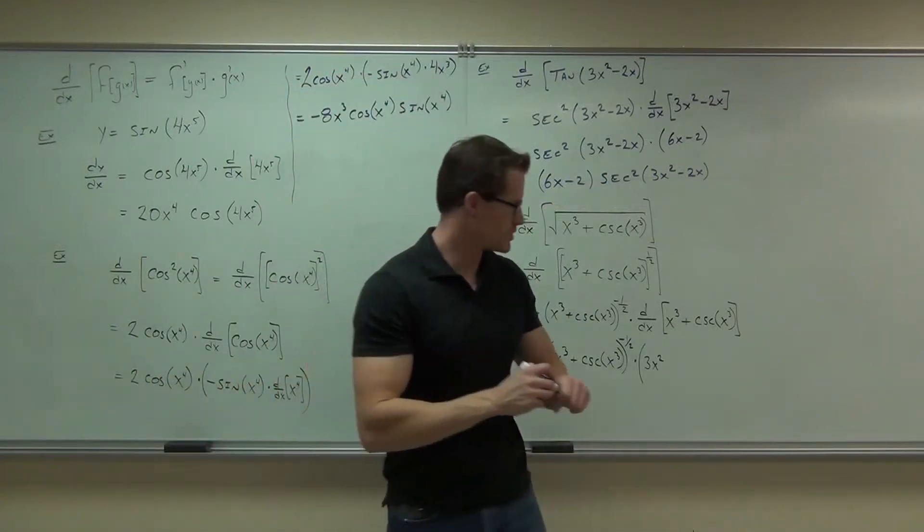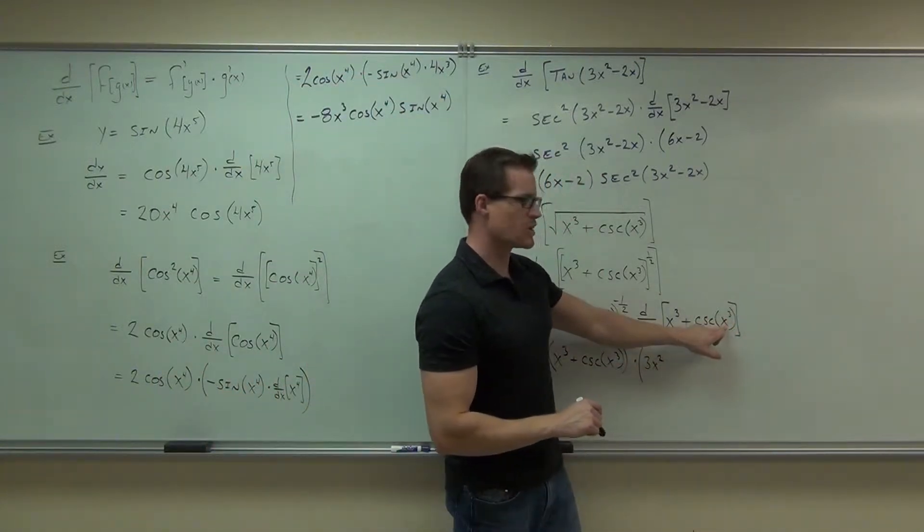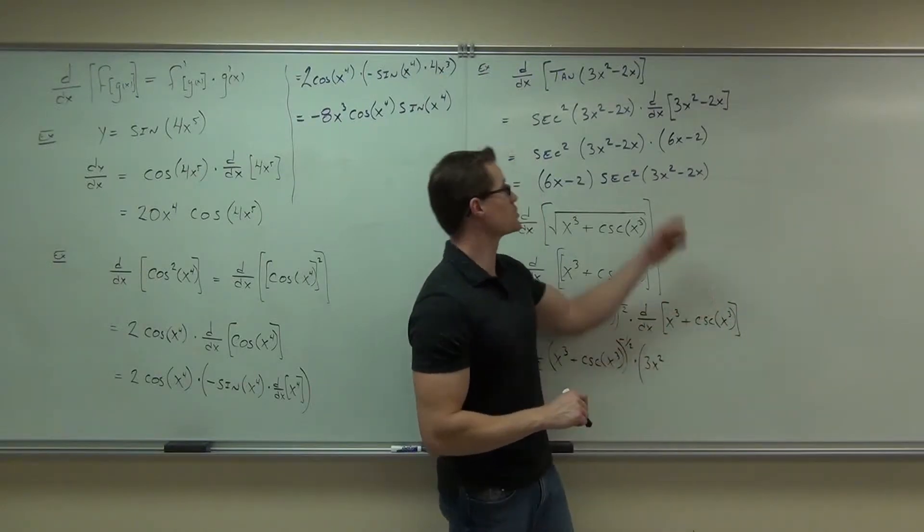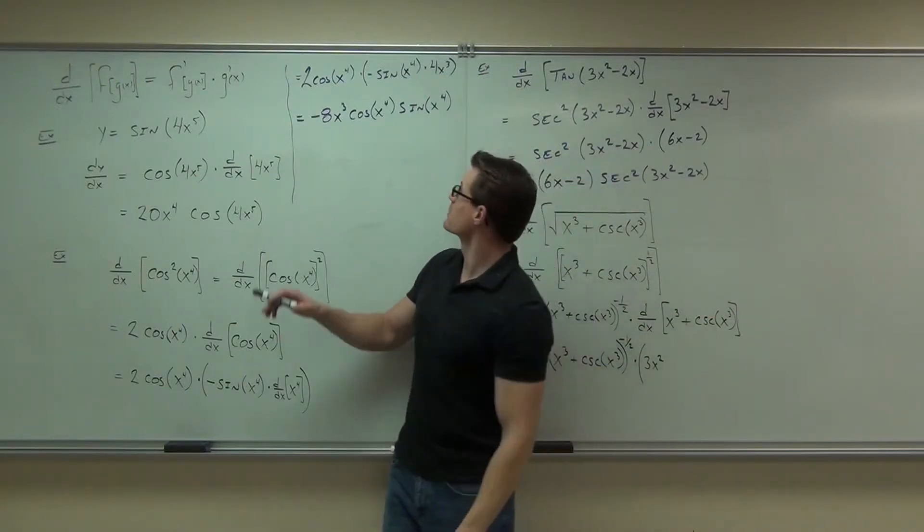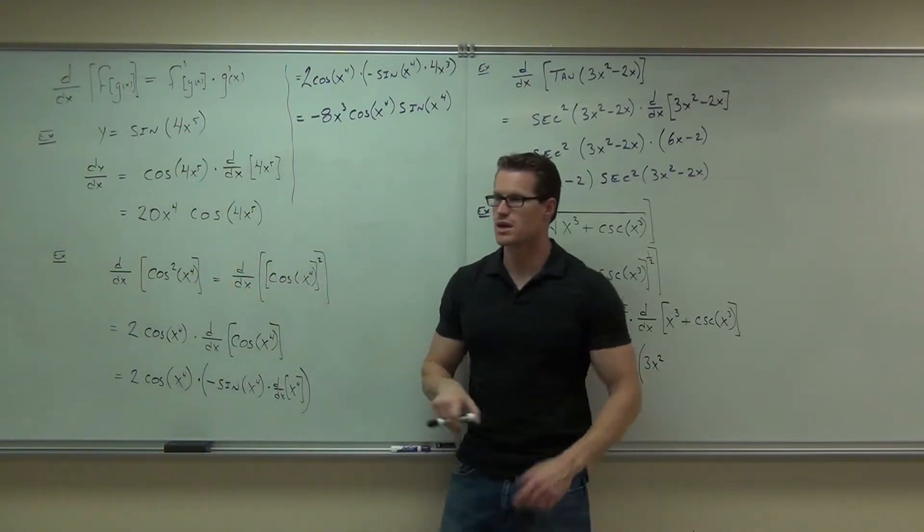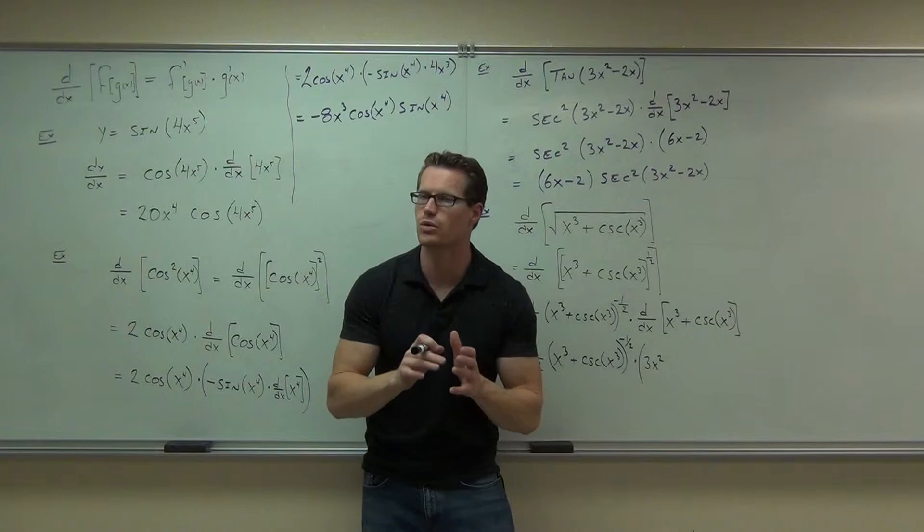The chain rule here, chain rule says, sure, it is cosecant, but if there's something special in there besides an x, that means a chain rule, because that's a composition just like this one was, just like that one was. That's a composition. You need a chain rule there.